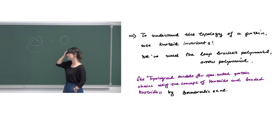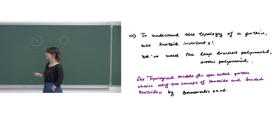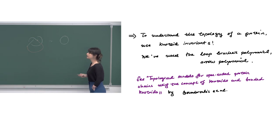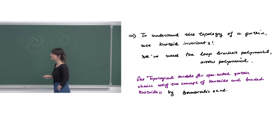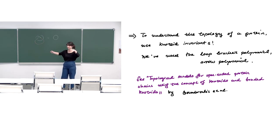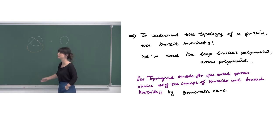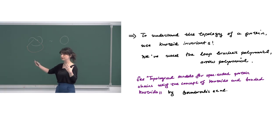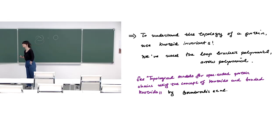You can refer to a paper titled 'Topological models for open-ended protein chains using the concept of knotoids and bonded knotoids.' In this paper we exhibited convincingly many projection directions for a given protein chain and looked at the dominant type of knotoids in the plane. Since there is not just a unique projection direction, we looked across different directions and utilized knotoid invariants such as the loop bracket polynomial to understand the dominant type.